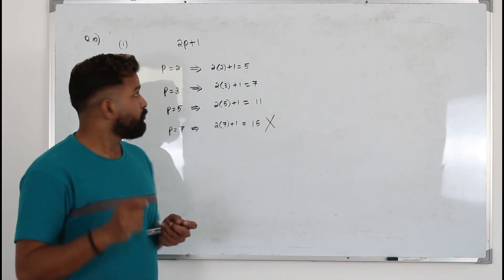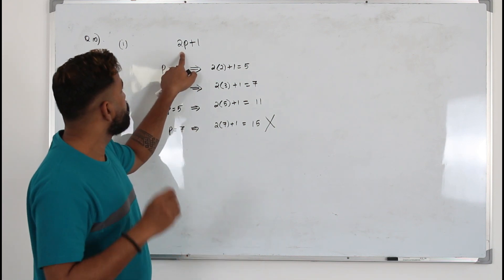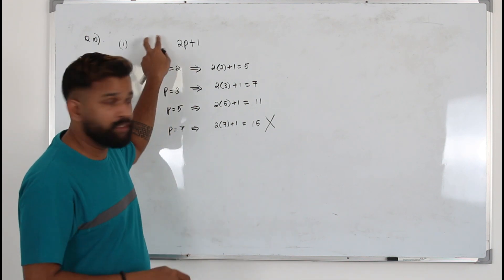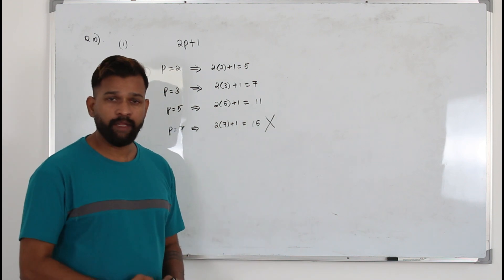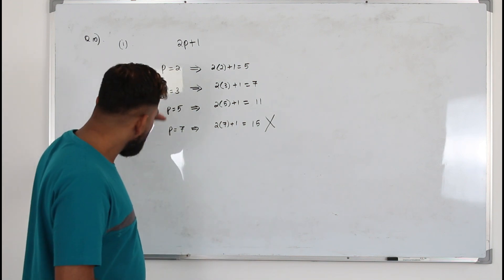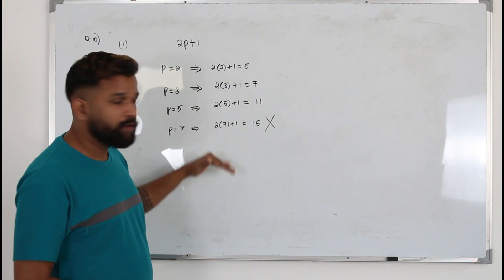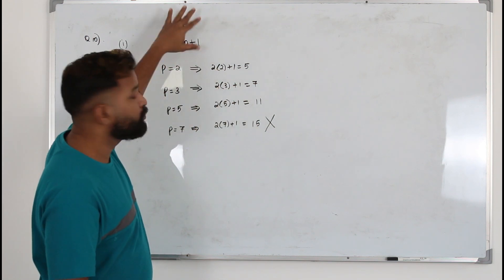So whenever they ask you to prove a given statement is wrong by taking a counter example, try not to take a random number. Start with the simple numbers and just move on. At some point you can disprove the statement.